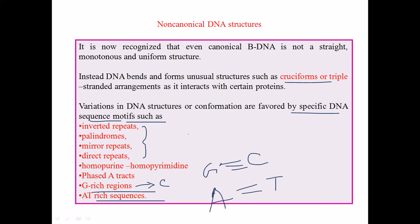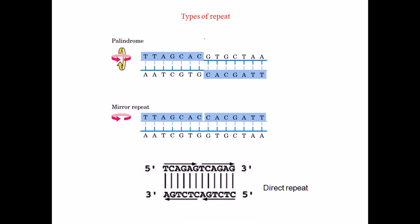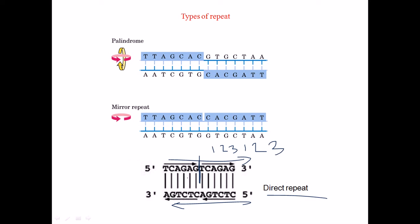Let's begin with the different types of repeats that we can find inside DNA. For the direct repeat: reading from 5-prime to 3-prime, we have the sequence T-C-A-G-A-G, and then after this part the same sequence repeats again — T-C-A-G-A-G. So sequence 1-2-3 repeats as 1-2-3 again — that is called a direct repeat. The same thing happens in the opposite strand, maintaining the complementary nature of DNA, so if we have G on one side we have C on the other side.